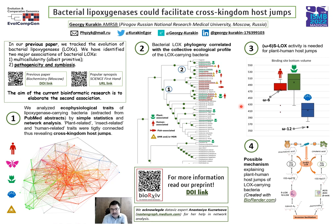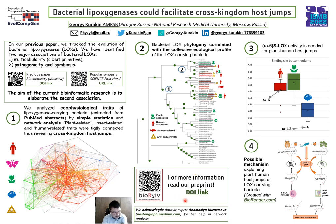Their regiospecificity is determined by the total volume of the substrate binding pocket. You can see that plant-pathogen or plant-symbiont lipoxygenases and human-associated bacterial lipoxygenases share the same bottom volume and regiospecificity. This gives us the possibility to infer a possible mechanism, though it is just a hypothesis. For more information, please refer to our preprint — we have included the QR code and the DOI link for your convenience. Thank you for visiting my poster.